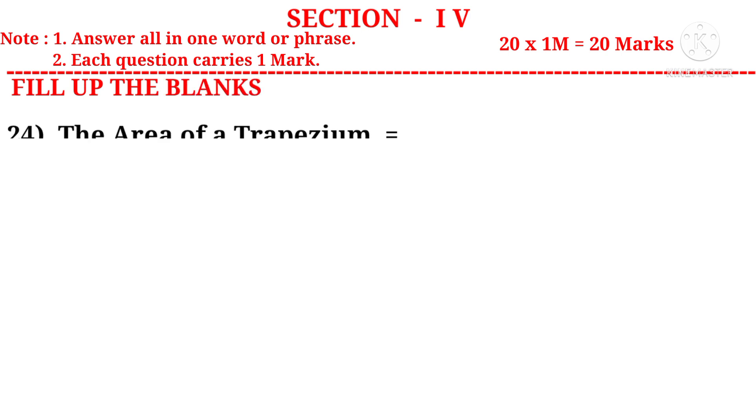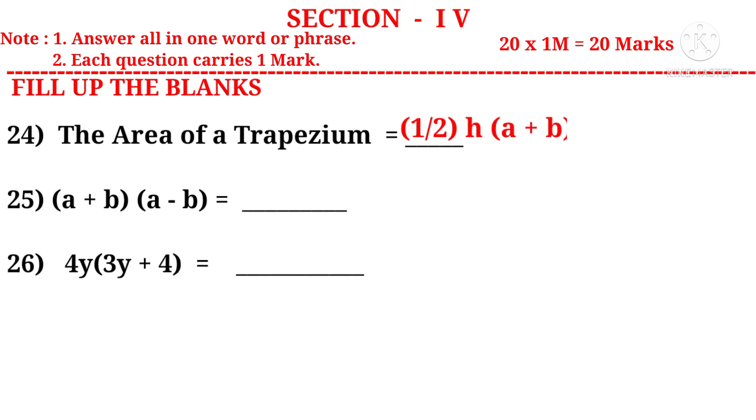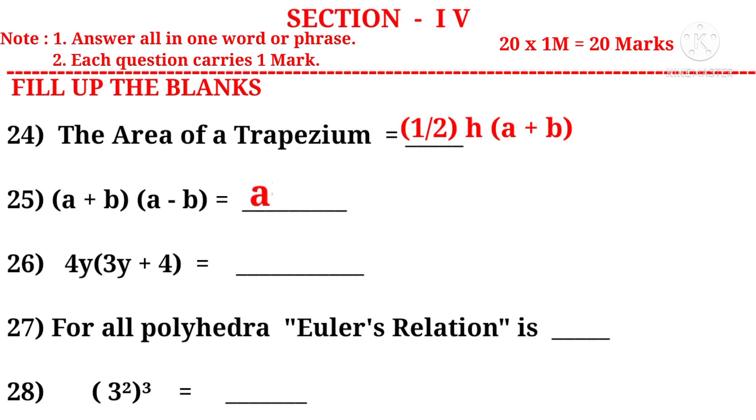Now let us take fill up the blanks. Question 24: The area of a trapezium is equal to 1/2 × H × (A + B). Question 25: (A + B)(A - B) = A^2 - B^2. Question 26: 4Y × (3Y + 4) = 4Y × 3Y is 12Y^2 + 4Y × 4 is 16Y. Question 27: For all polyhedra, Euler's relation is F + V = E + 2, where F is the number of faces, V is the number of vertices, and E is the number of edges of a 3D object.